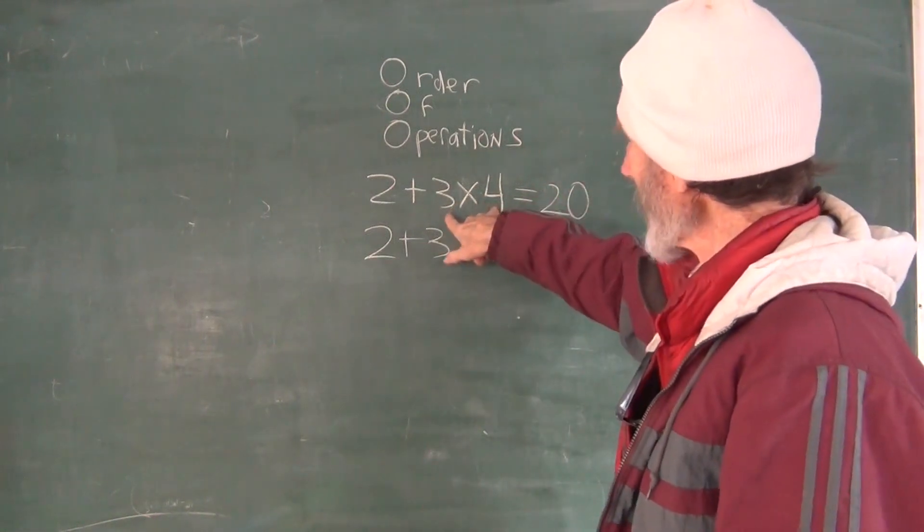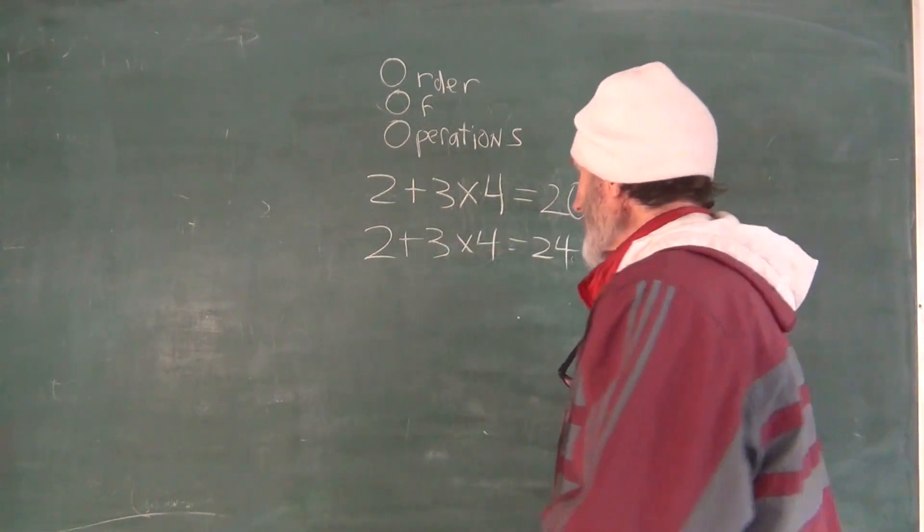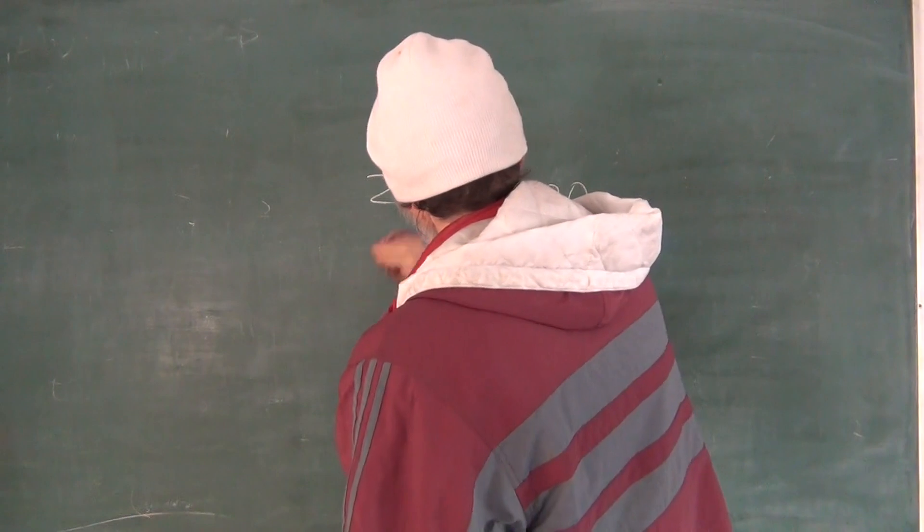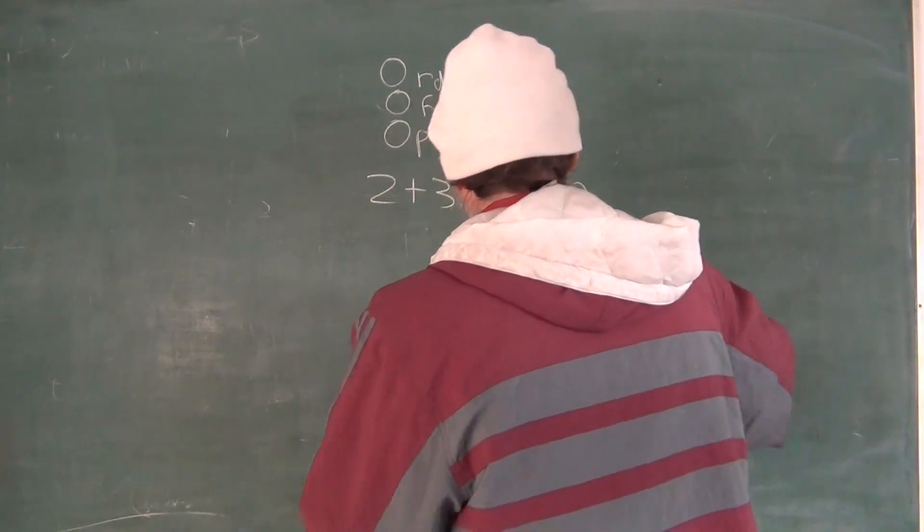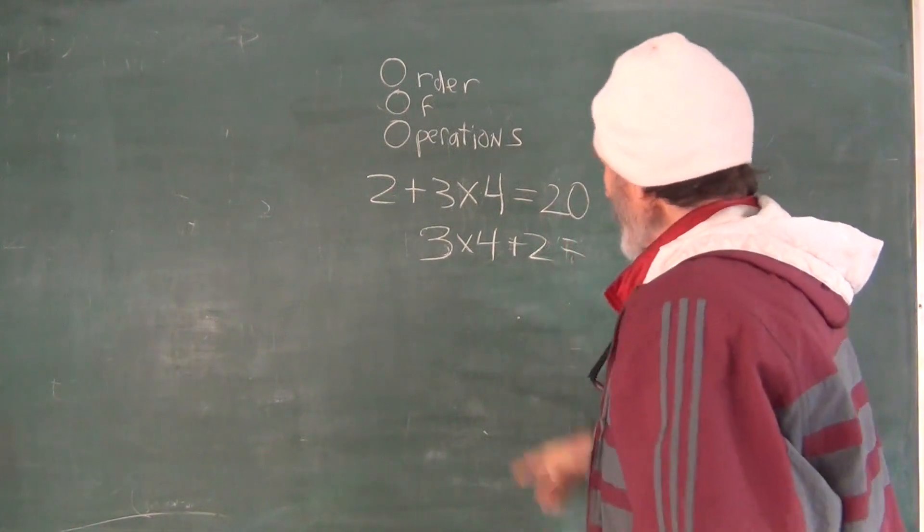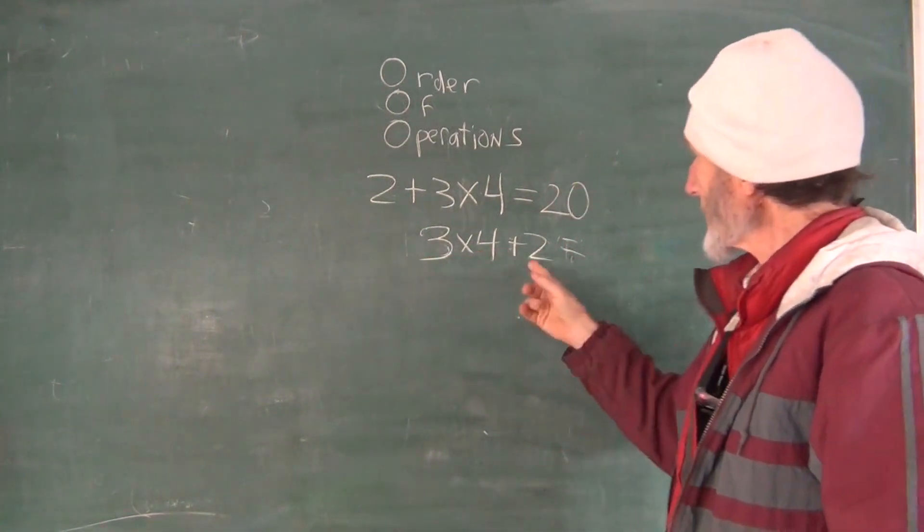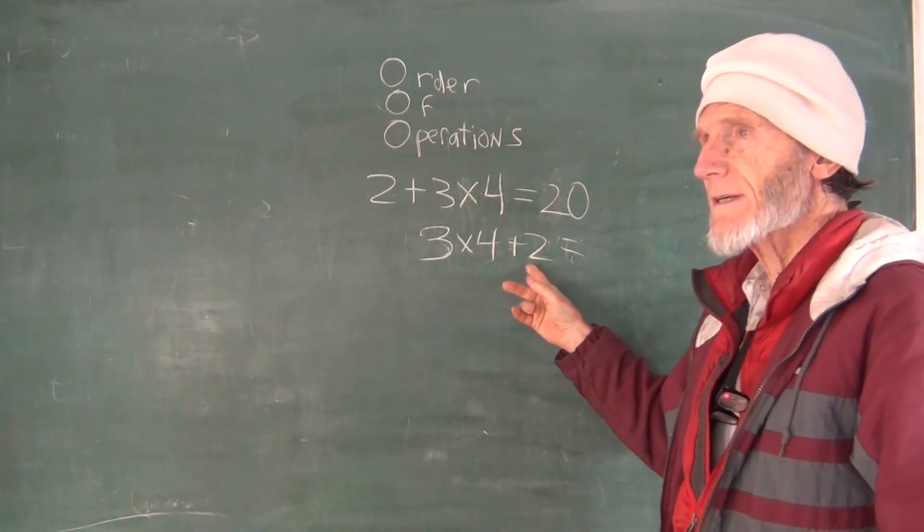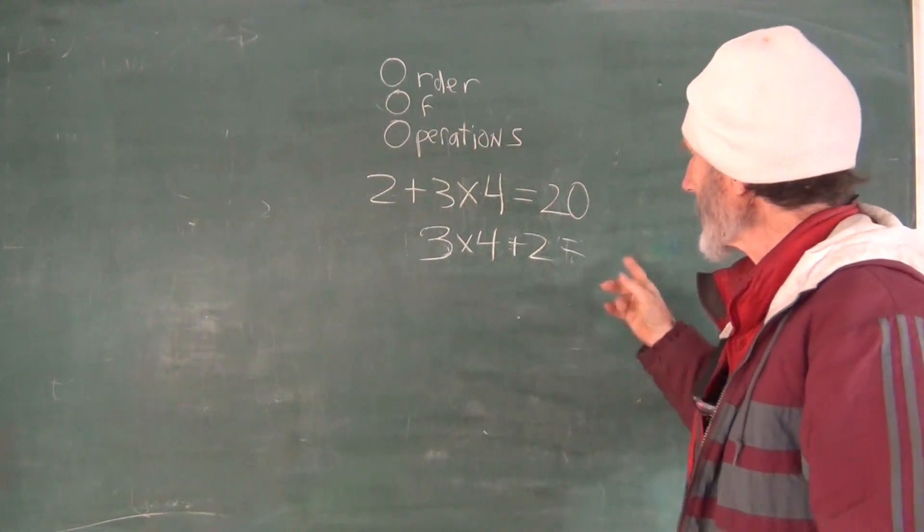So even though this is backwards, I mean if we went like this and wrote this thing, three times four plus two, well then you do three times four is 12 plus two is 14. 14, yeah right, okay.